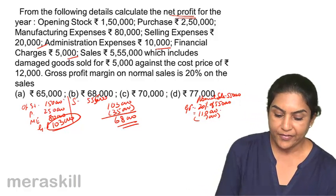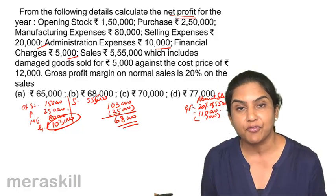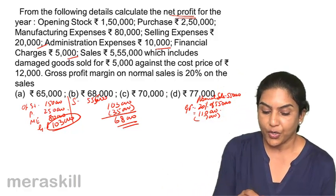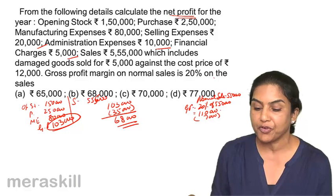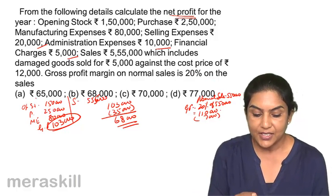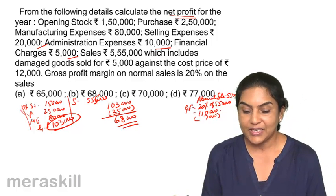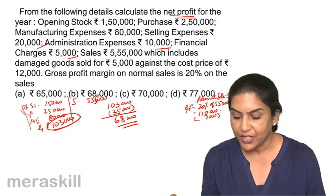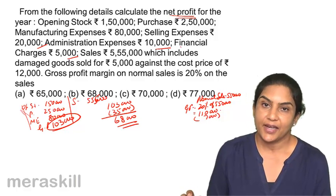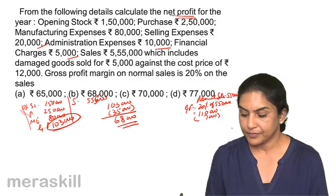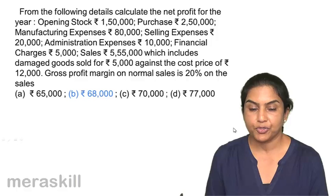Mind you, though I started with opening stock, purchases, and manufacturing expenses, we did not need this information at all. When the question asks to calculate net profit and gives us the gross profit margin on normal sales, those items are not required. We can straight away start with the sales, arrive at the gross profit, reduce 35,000 other expenses, and get the net profit. Correct answer 68,000, option B.